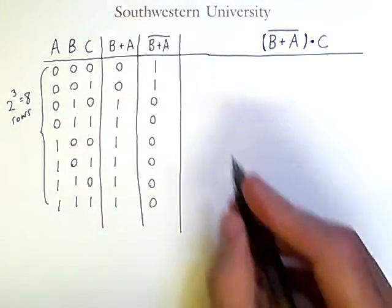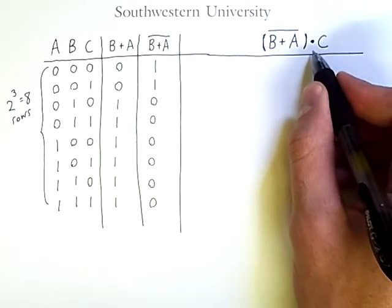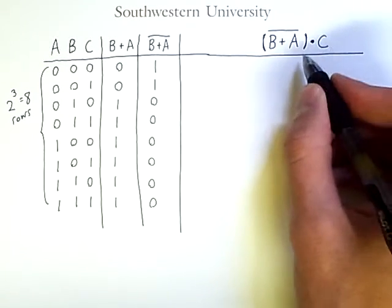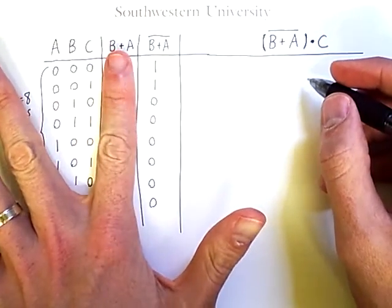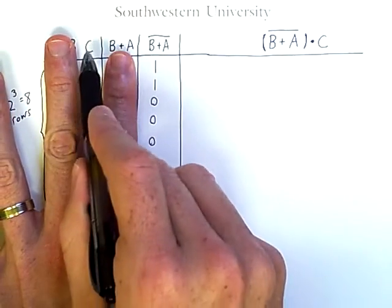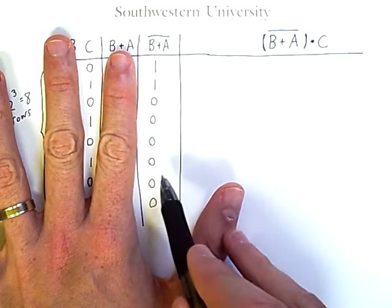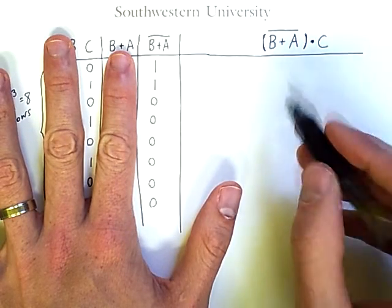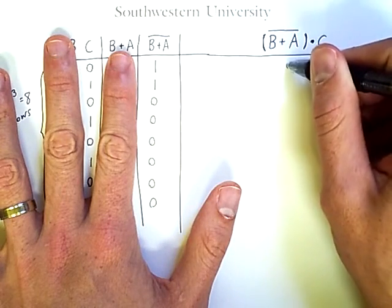And from this point, I have the negation of B or A and C. So now I can jump ahead to the final column. And I can compute this by ignoring this intermediate result. I'm only going to compare the C column and this sub-expression I just computed. I'm going to use logical AND to determine what the result is. So 0 and 1 will be a 0.